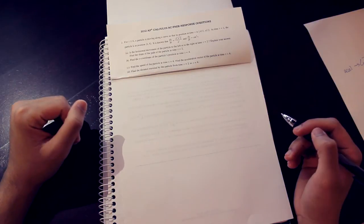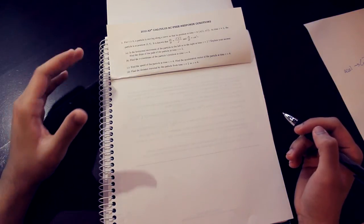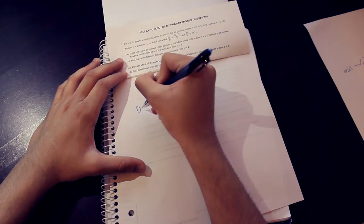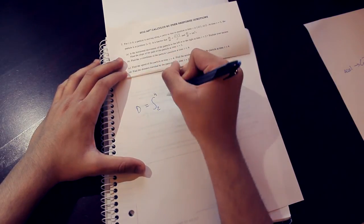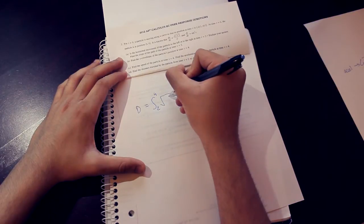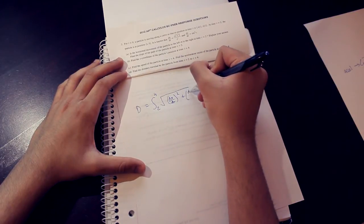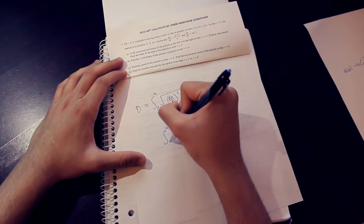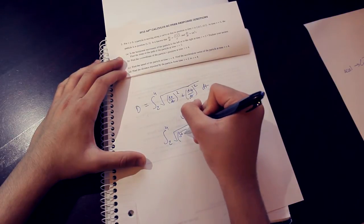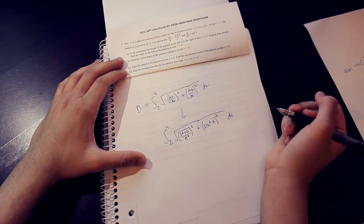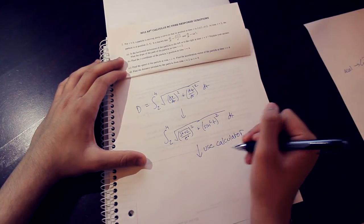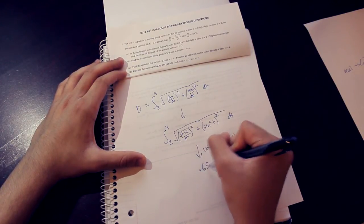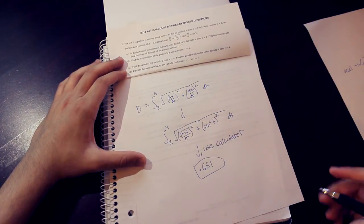Part D asks us for the distance the particle travels from time 2 to 4, so we're going to do a similar thing to Part C and use the resultant of the displacement. But to get the displacement, we need to integrate, so we will do the integral from 2 to 4 of the square root of dx dt squared plus dy dt squared. Use your calculator to do the heavy lifting, and then you should get .651 as a final answer to that problem.